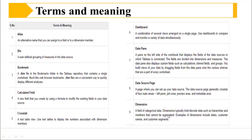Dimensions are fields of categorical data. A categorical data field holds discrete data or hierarchy members that cannot be aggregated — for example, dates, customer names, and customer segments. These are all called dimensions.